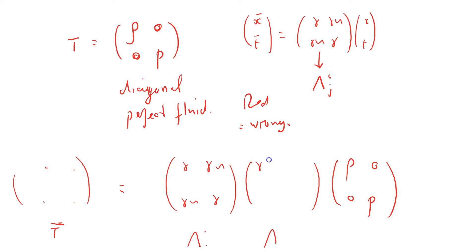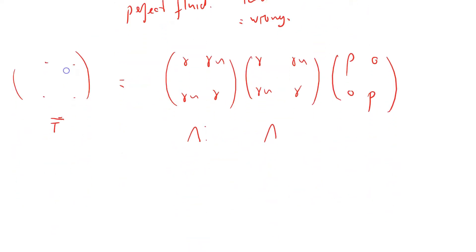Okay, so I can write out gamma, gamma u, gamma u, gamma there, which equals, I'm going to multiply the bracket out first, gamma squared plus gamma squared u squared for the top left, 2 gamma squared u down here because we've got the gamma times gamma u plus gamma u times gamma. This one's going to be the same, gamma squared u, and this one's going to be gamma squared u squared plus gamma squared times the original matrix 0p.